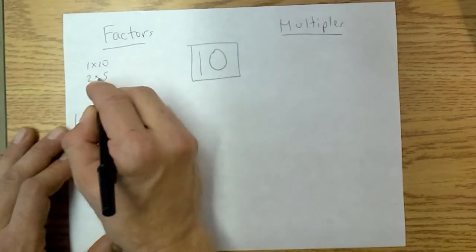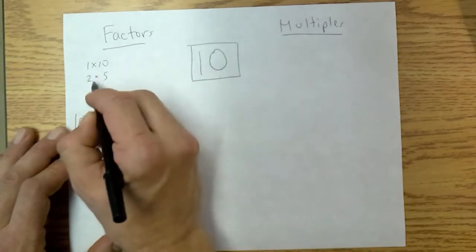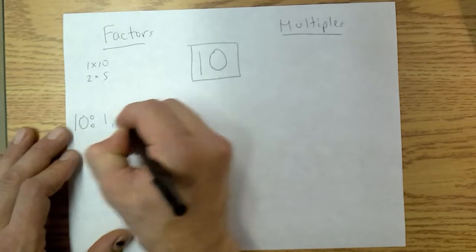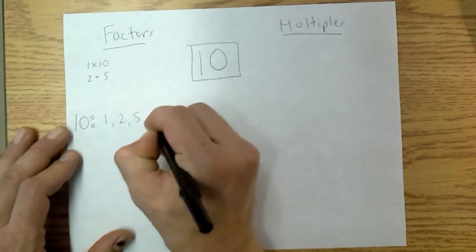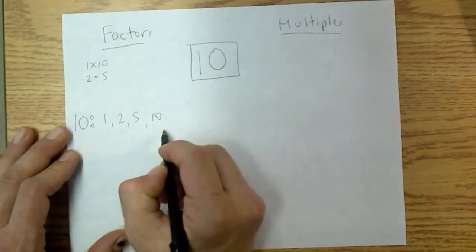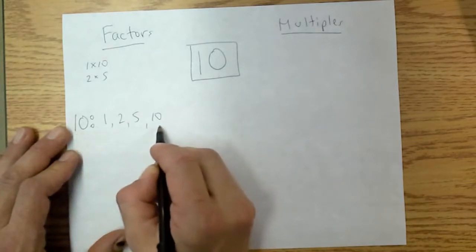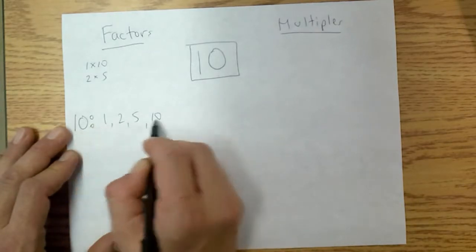That looks like I've reached all the different numbers that can multiply together to give me 10, and now I simply list them in order from smallest to largest. And there we go. These are the factors of 10, and you list them just like that in order from smallest to largest.